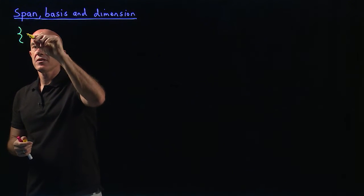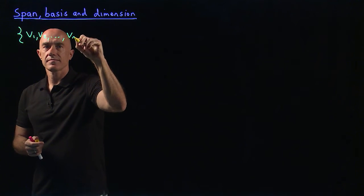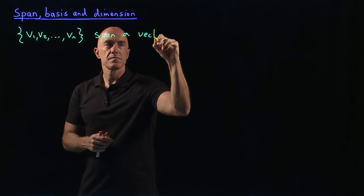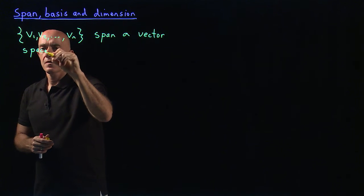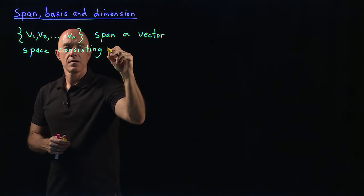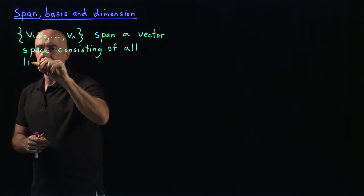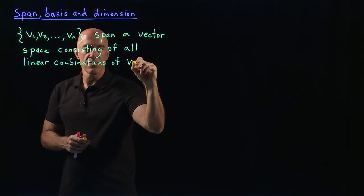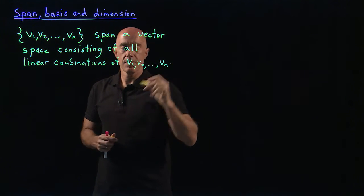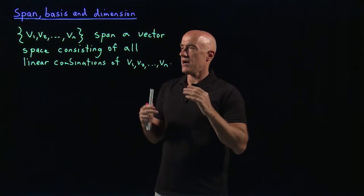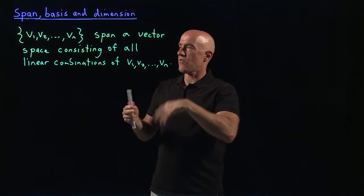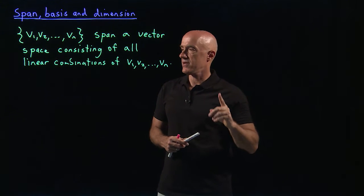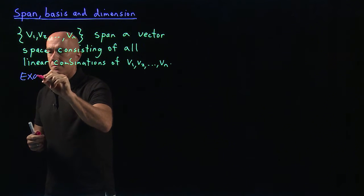Let's start with a set of vectors V1, V2, through Vn. We say that these vectors span a vector space consisting of all linear combinations of V1 through Vn. So if you're given a set of vectors, you can generate a vector space by just forming all linear combinations of that set of vectors, and then we say that the set of vectors spans that vector space.